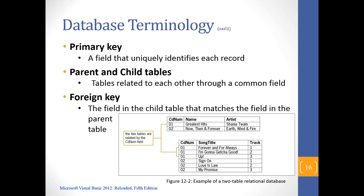A primary key is a unique key — you cannot have duplicates, just like there's only one of you in the classroom. The first record has CD number '01,' a title, and an artist name. An artist name doesn't have to be unique since multiple artists can belong to the same CD, but the CD number makes the entire record unique. In the second table, the CD number, title, and track fields have duplicates — track numbers repeat, and song titles can appear on different albums.